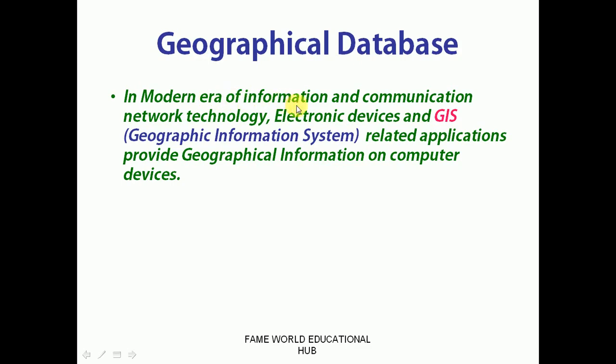So where are these locations actually stored? Electronic devices and the Geographic Information System related applications provide geographical information on computer devices. That means the geographical data is basically stored on the geographical database management system. The geographical database also follows all the rules and supports traditional DBMS.